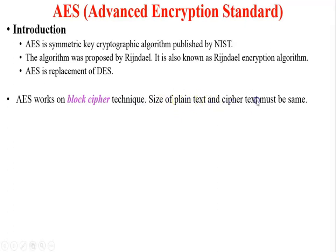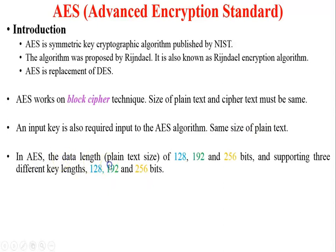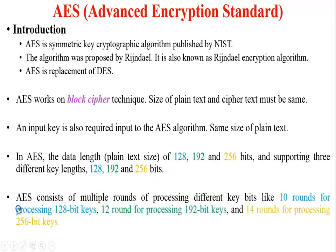AES works on block cipher technique, so as per the principle of block cipher the plaintext size and ciphertext size must be same. The input key given to the AES algorithm is the same size as the plaintext. In AES, the data length used will be 128 bit, 192 bit, and 256 bit. If you want to use 128-bit encrypted data, you must use a key length of 128 bit; for 192-bit encryption the key length is 192; and the same applies for 256 bits.